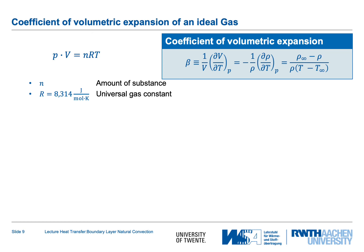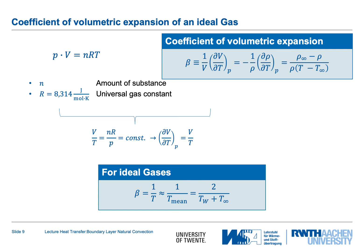A few more words about the volumetric expansion coefficient. For an ideal gas, the equation of state is pV = nRT, where n is the amount of substance and R is the universal gas constant. From this, the ratio V/T equals nR/p, which is a constant. It follows that dV/dT at constant pressure equals V/T, and therefore beta equals 1/T for an ideal gas. In practice, since temperature varies between the wall temperature and T-infinity at the edge of the boundary layer, we use the mean temperature: beta = 1/T_mean = 2/(T_wall + T_infinity).